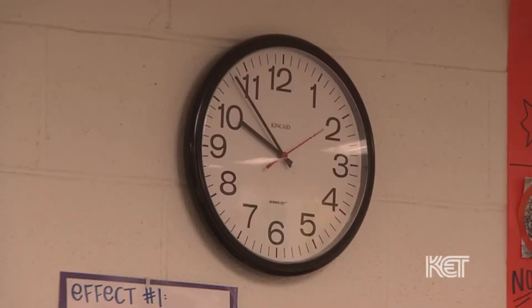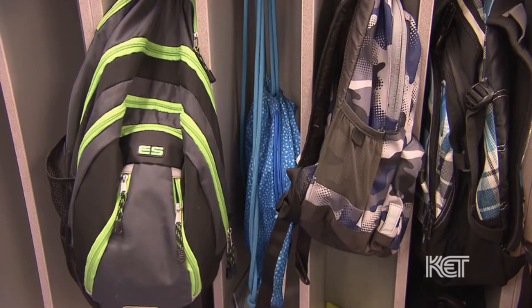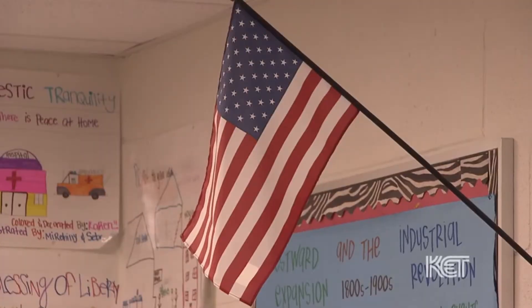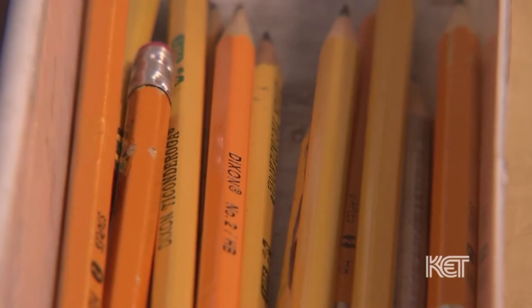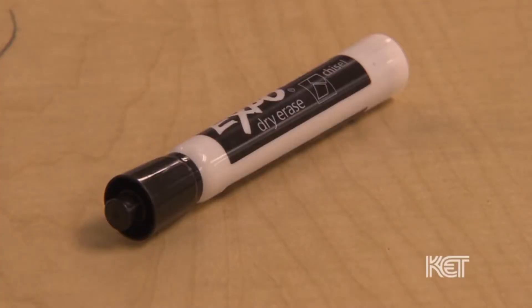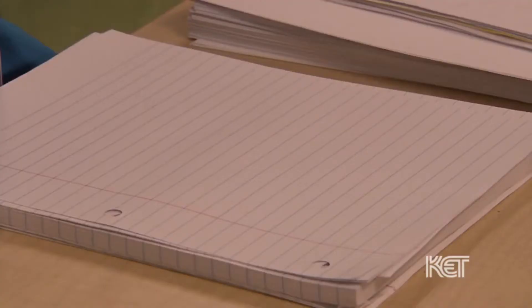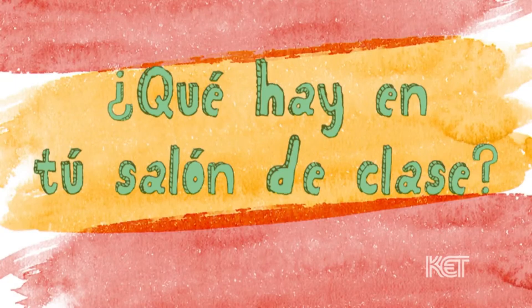¿Qué hay en el salón de clase? Hay un reloj. Hay unas mochilas. Hay una bandera. Hay unas sillas. Hay unos lápices. Y hay un marcador. Hay unas hojas de papel. ¿Qué hay en tu salón de clase? El salón de clases es el lugar en donde recibimos nuestras diferentes clases con tu maestra y con los maestros de especiales.